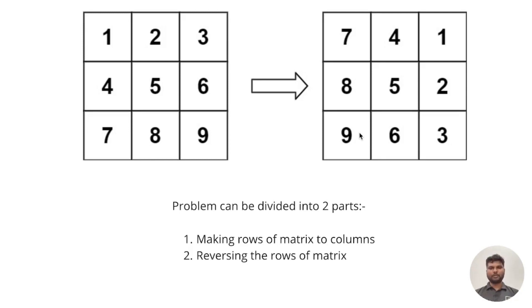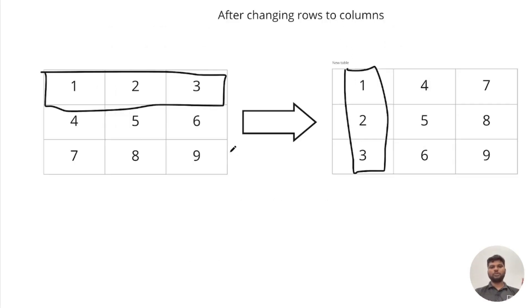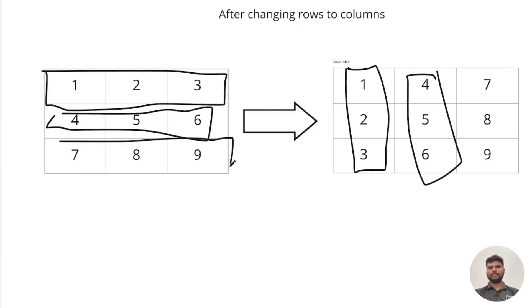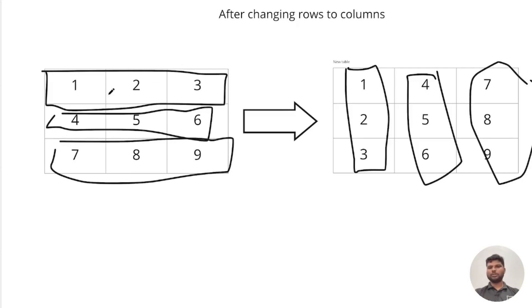Based on this pattern, the solution has two sub-steps: first, make the rows of the matrix into columns, and then reverse the rows. Let's get a walkthrough of how the first part works. We need to make the rows into columns — the first row becomes the first column, the 4 5 6 row becomes the second column, and the third row becomes the third column.